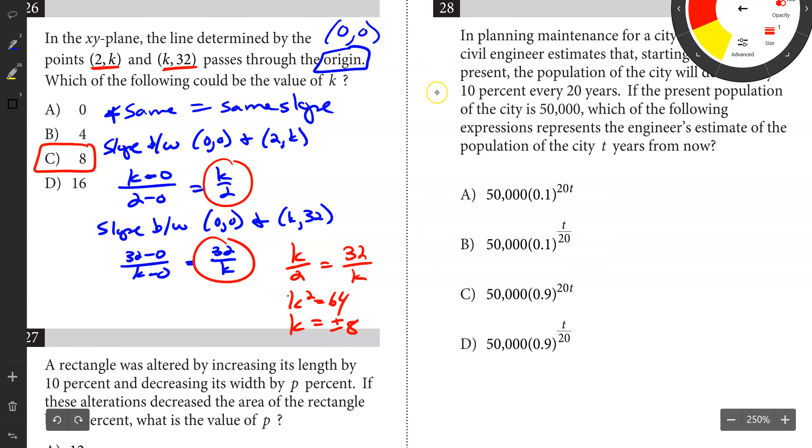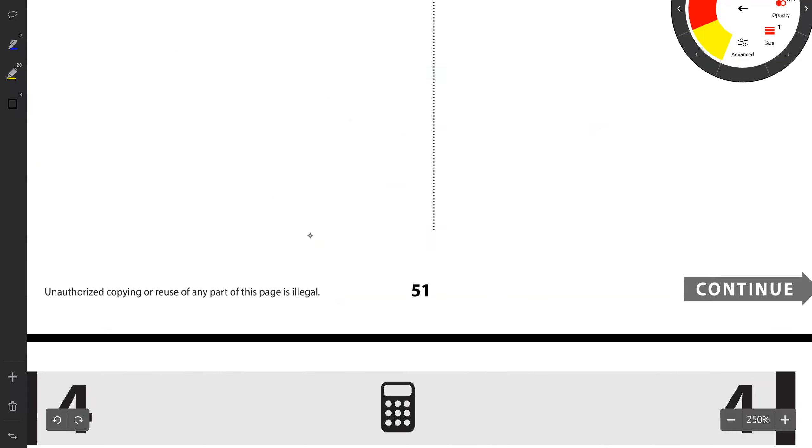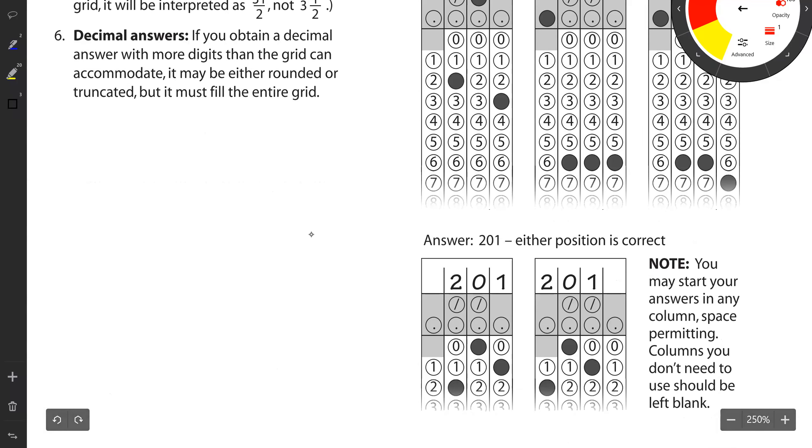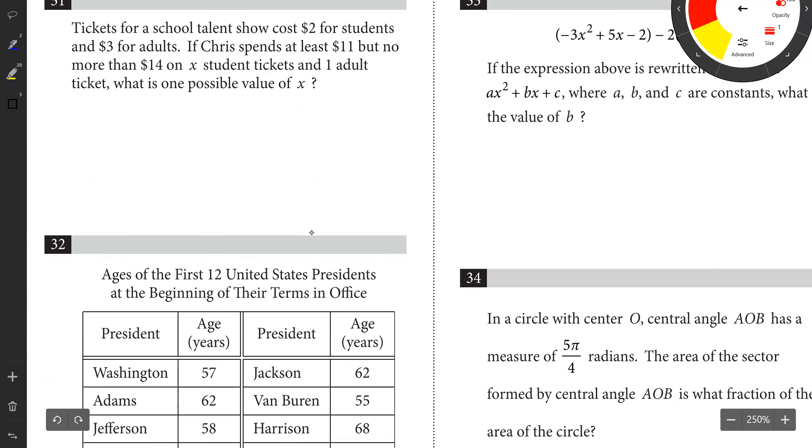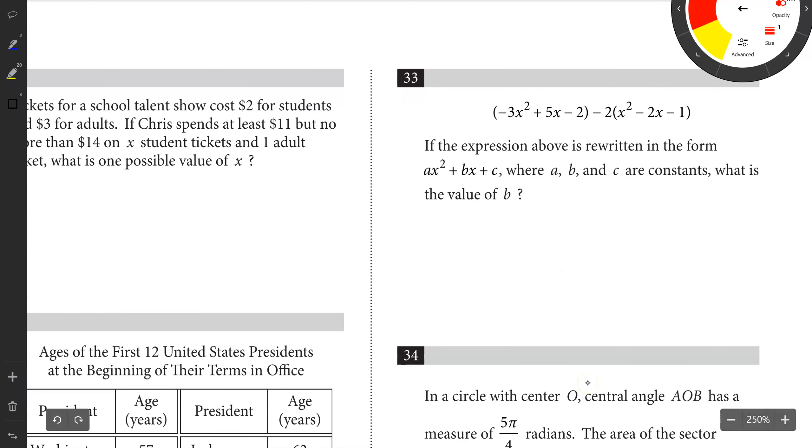The next couple we're going to do, we got two left. These are going to be in the grid response section. We're going to look at number 33. It says, if the expression above is rewritten in the form ax squared plus bx plus c, where a, b, and c are constants, what is the value of b? This goes back to some polynomial operations.